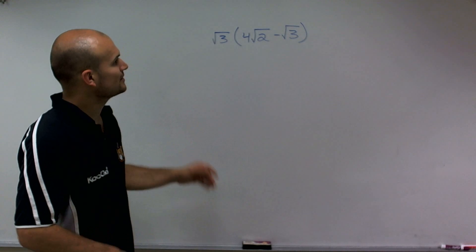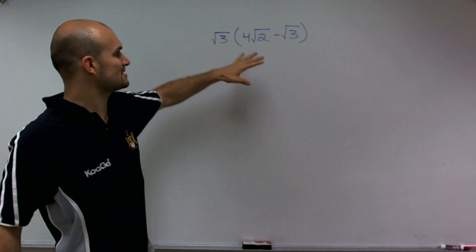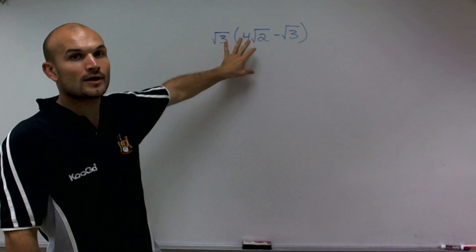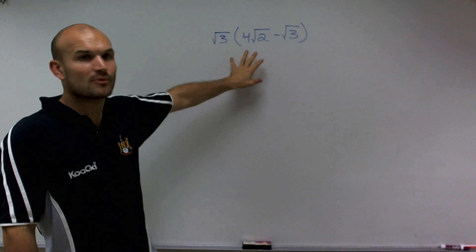So a quick thing to remember is whenever we have a number outside of our parentheses and we don't see an operation, we know that we're using multiplication.